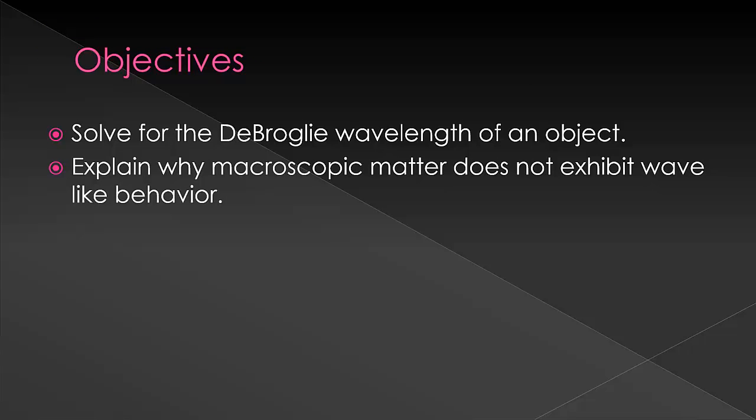Hopefully now you can solve for the De Broglie wavelength of an object, whether that be from being given directly the mass and the velocity, or perhaps using the kinetic energy equation equals one-half mv squared to solve for the velocity. And you can explain why macroscopic matter does not exhibit wave-like behavior.